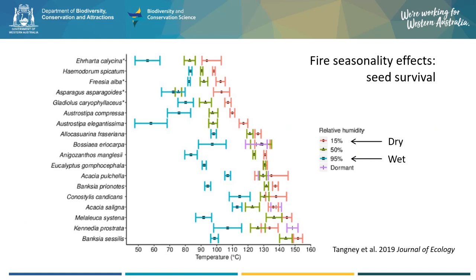Another important aspect of fire season effects is how well seeds might survive fire in different seasons. Rowan Tangney works on this in his PhD and found that seed moisture matters. This figure shows the lethal temperatures that can kill half of a seed batch under different moisture conditions for several Banksia woodland species. We can see that lethal temperatures increase down the list, showing that species might show varying sensitivity to high-intensity fire. We also see that wet seeds generally have less resistance to fire temperatures than dry seeds. In the real world, this might mean that seeds are at greater risk of death if they're burnt during wet seasons, or at times of the year when they are wet.